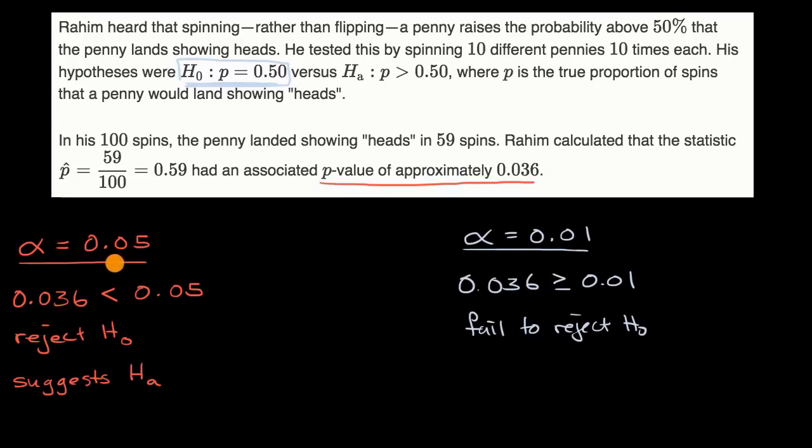And so because of the difference between what you would conclude given this change in significance levels, that's why it's really important to set these levels ahead of time. Because you could imagine it's human nature. If you're a researcher of some kind, you want to have an interesting result. You want to discover something.